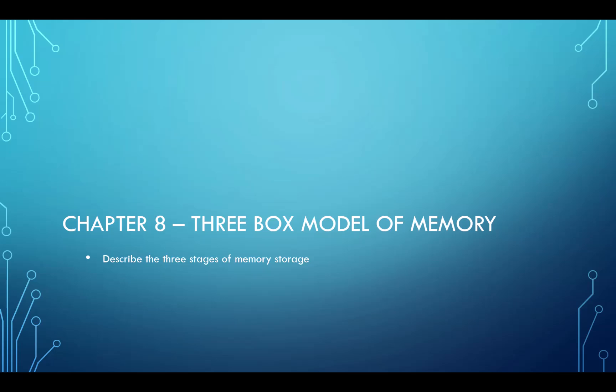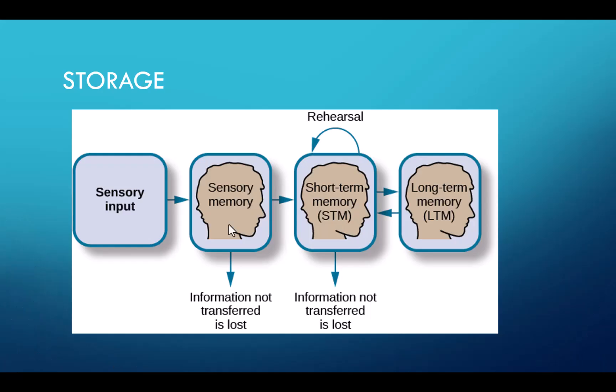In this video, we'll discuss what's called the three-box model of memory, also known as the three stages of memory. There are different models for memory. In this one, storage comes from different locations. We have our sensory memory, we have short-term memory, and we have long-term memory.